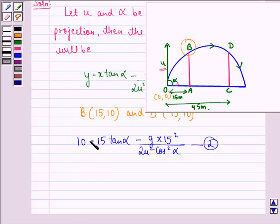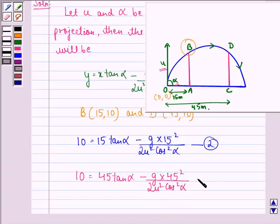So also we have 10 equals to 45 tan alpha minus g into 45 square divided by 2u square cos square alpha, and this we call equation 3.